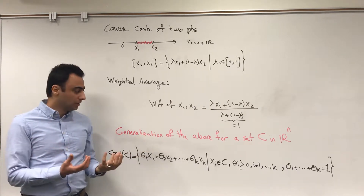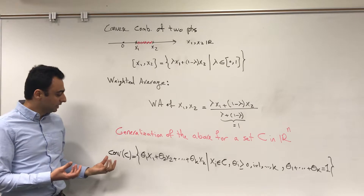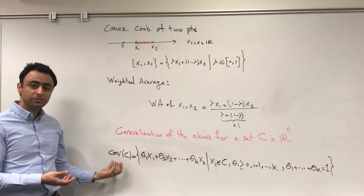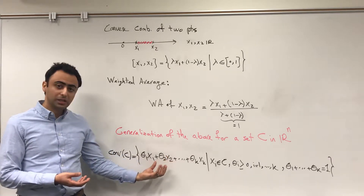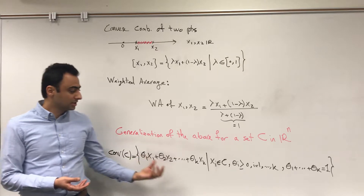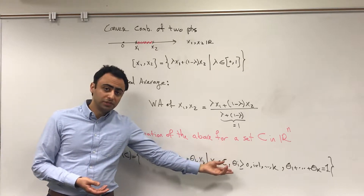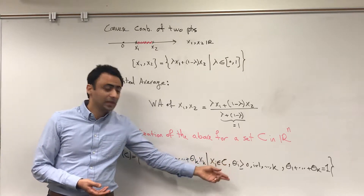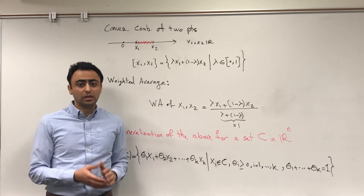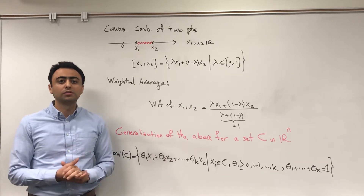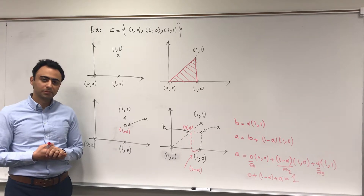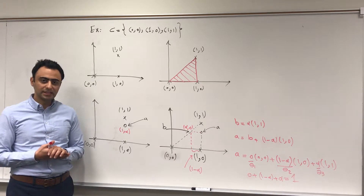If we generalize that notion to points in R^n and a set containing all such points, we get the convex hull of a set C, denoted by conv(C). This is the linear combination of points in C such that all coefficients are non-negative and the summation of all coefficients is equal to one. That is the notion of convex hull.